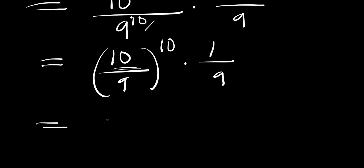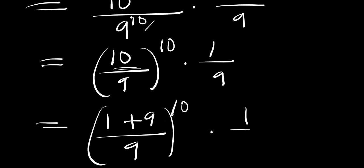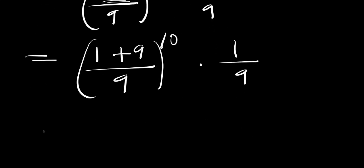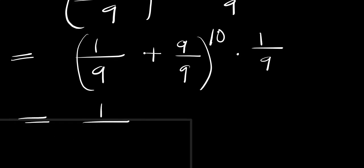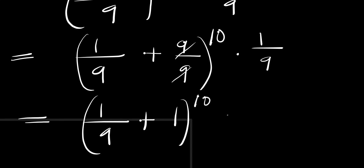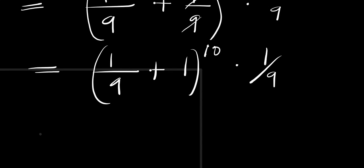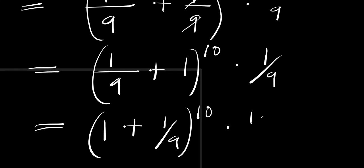We rewrite 10/9 as 1 plus 1/9, since 9/9 plus 1/9 equals 10/9. Splitting gives us (1/9 + 9/9) raised to the power of 10, times 1/9. This simplifies to (1 + 1/9) raised to the power of 10, times 1 divided by 9.